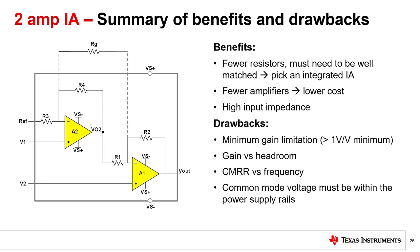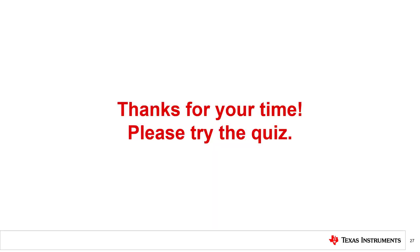As with other IA topologies, the 2-amp IA has its benefits and drawbacks. Benefits include requiring fewer amplifiers and resistors, reducing IC size, current consumption, and manufacturing cost, while also satisfying the need for high input impedance. In terms of drawbacks: the 2-amp IA can only be configured for gains greater than 1 V/V; high gain configurations allow for higher common mode voltages; and CMRR is frequency dependent and degrades with increasing frequency. As with the 3-amp IA, a 2-amp IA must also have a common mode input voltage between the power supply rails. If your application can accept these drawbacks in return for a smaller solution size, lower power consumption, and lower manufacturing cost, you can consider the 2-amp IA topology. That concludes this video. Please try the quiz to test your understanding of this video's content.